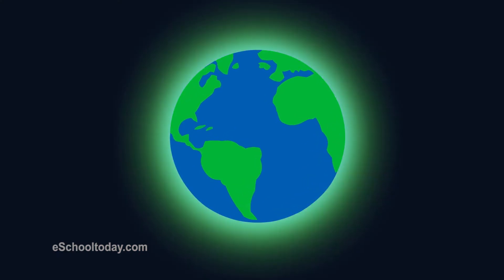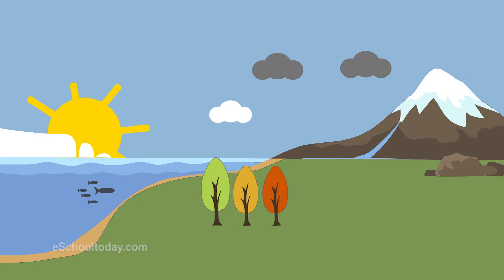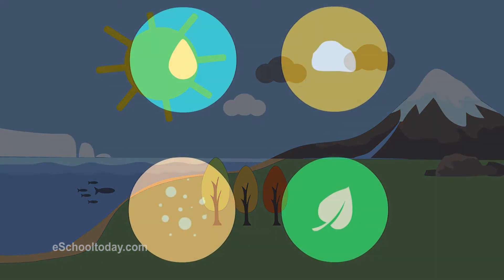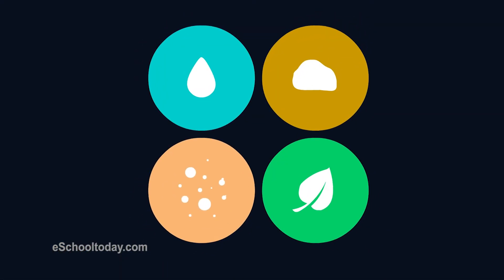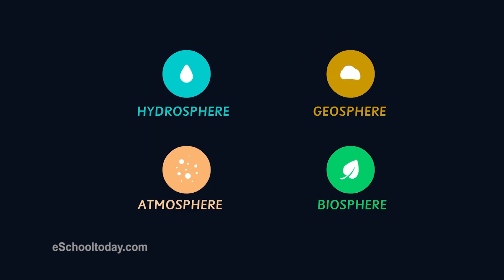Think of all the stuff that is on the Earth's surface, under the surface, and above the surface. We can place almost everything in one of four spheres: the hydrosphere, the geosphere, the biosphere, and the atmosphere.